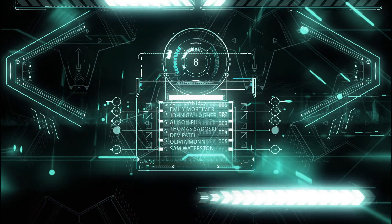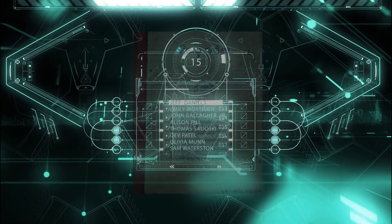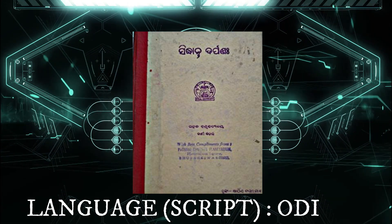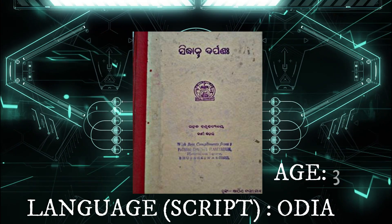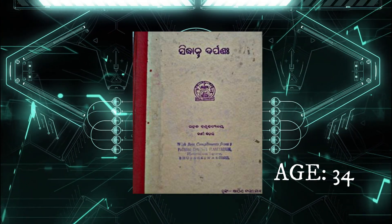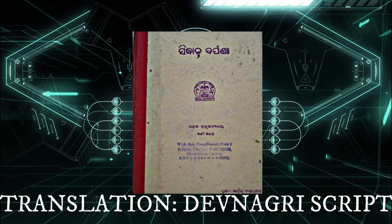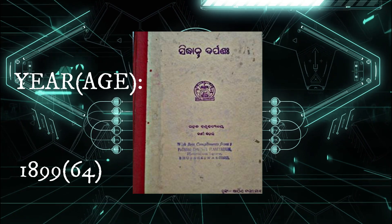Pathani Samanta wrote all his discoveries in his book named Siddhanta Darpana. Initially written in Odia at the age of 34, he kept on improving it and translated it into Devanagari script by 1899 at the age of 64.